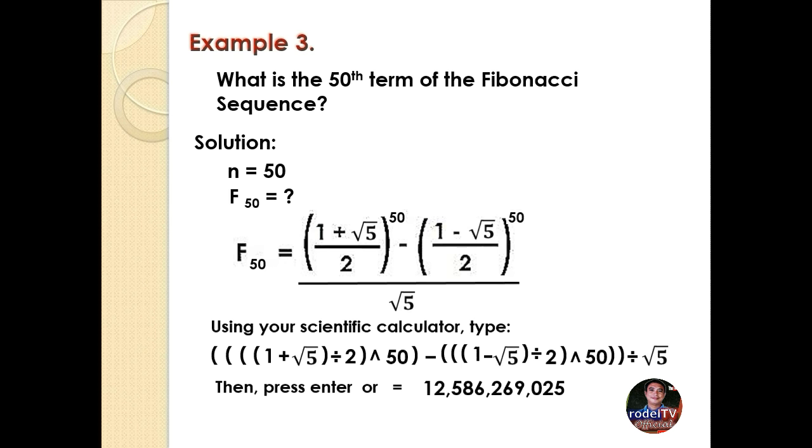Now, since it is already a whole number, there's no need for us to round off. Therefore, the 50th term of the Fibonacci sequence is 12,586,269,025.